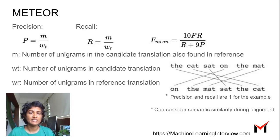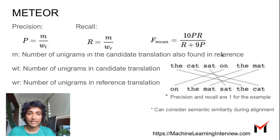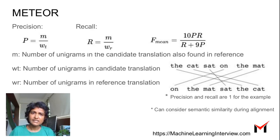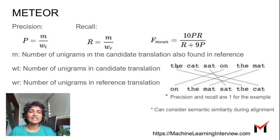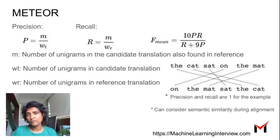Once we have an alignment, precision is the ratio of unigrams in the candidate translation that also appear in the reference, divided by total unigrams in the candidate — how many candidate words are also in the reference. Recall measures out of all words in the reference, what percentage are in the candidate. In this example, the candidate and reference have exactly the same set of words, so both precision and recall will be one.